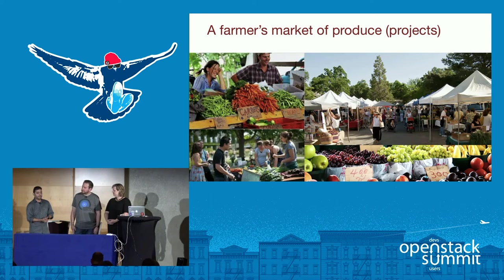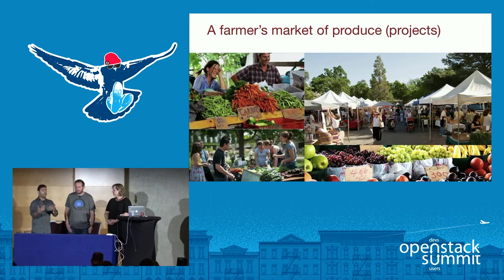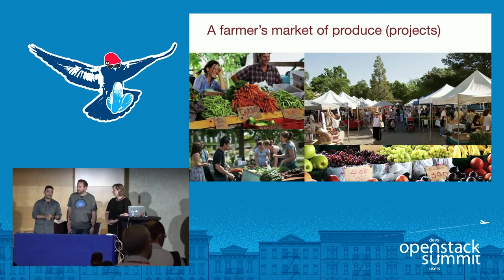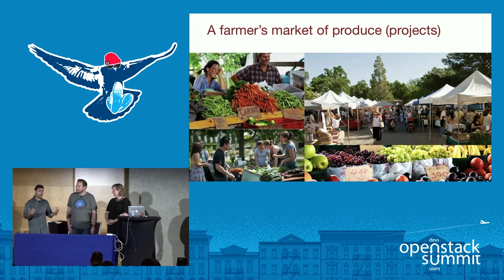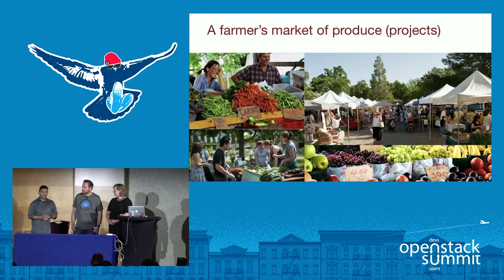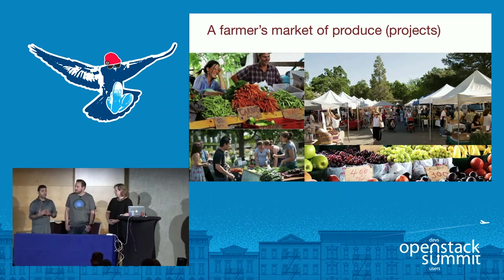When you go to a farmer's market, over time some booths become more popular than others — whether it's honey or a certain produce stall — and they become the attractions. In return, the farmer's market gives them preferential placement and expanded real estate to accommodate the crowd. That's how we look at core services in the big tent: everything is officially an OpenStack project, but we still have a set of services that are more popular and widely adopted — based on the user survey — that we consider core services of OpenStack.